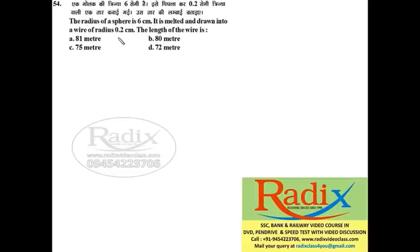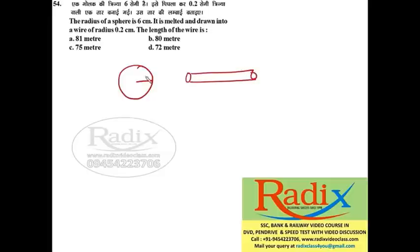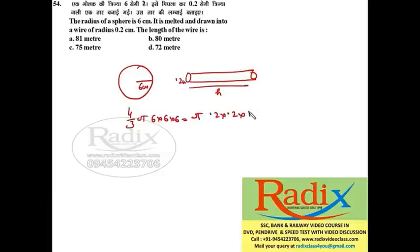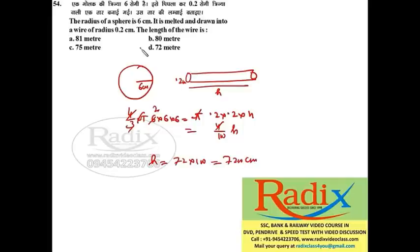Question 54: The radius of a sphere is 6 cm; it is melted and drawn into a wire of radius 0.2 cm. Let the length of the wire be h. Volume of sphere: (4/3)·pi·6³ = pi·(0.2)²·h. Pi cancels; this gives (4/100)·h, so h = 7200 cm or 72 meters. Answer is option D.